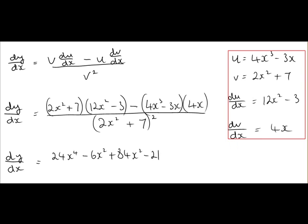Next, we have minus 4x cubed minus 3x by 4x, so we'll put in our minus, keep our brackets. 4x cubed by 4x gives us 16x to the power of 4, minus 3x by 4x gives us minus 12x squared. And that's all over 2x squared plus 7 squared. So you can leave the bottom line as it is, there's no real need to square that out.